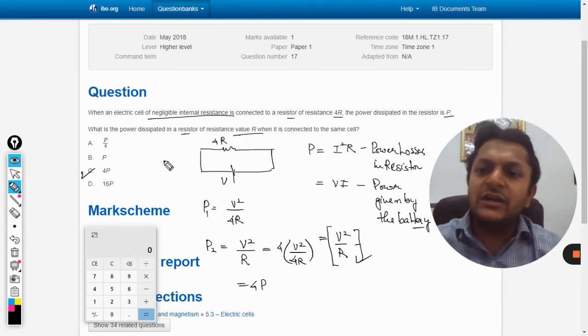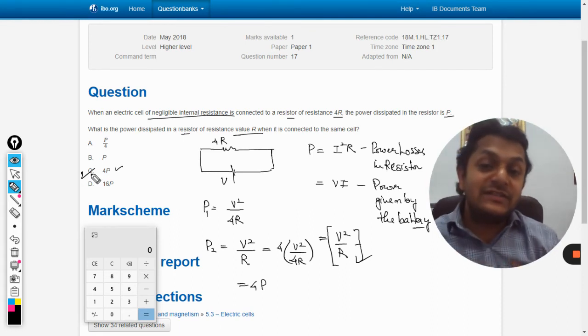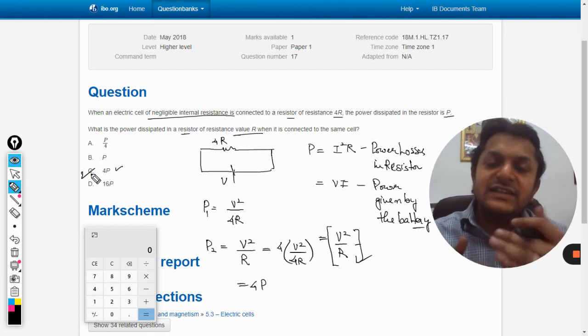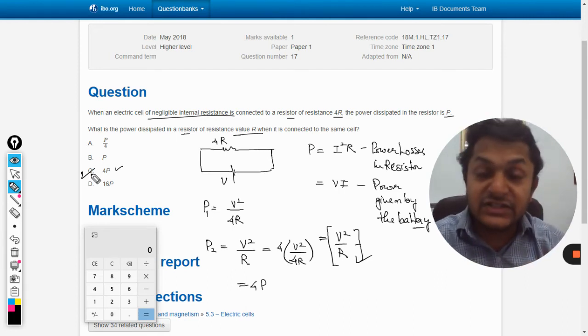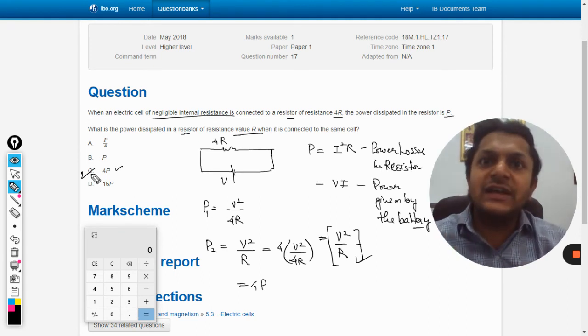In this case we can see this is a very beautiful example. You see, if the resistance is one fourth, if the resistance reduces, even then the power consumption has increased.